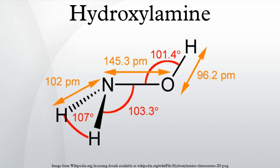Hydroxylamine has also been used in the past by biologists to introduce random mutations by switching base pairs from G to A or from C to T, in order to probe functional areas of genes. Nowadays other mutagens are used. Hydroxylamine can also be used to highly selectively cleave asparagine-glycine peptide bonds in peptides and proteins. It also bonds to and permanently disables heme-containing enzymes, and is used as an irreversible inhibitor of the oxygen-evolving complex of photosynthesis on account of its similar structure to water.